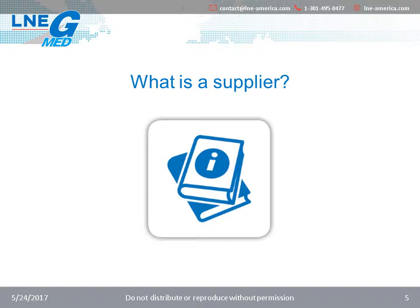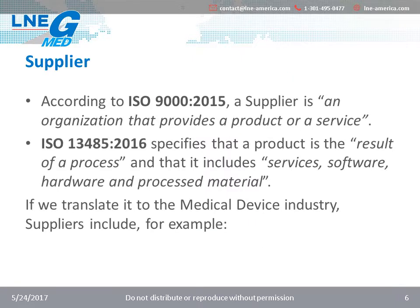So to start with, we will go through definitions. What is a supplier? Is there an official definition for it? There is no definition of supplier in the ISO 13485:2016 standard. However, it does refer to the general definitions found in ISO 9000 of 2015, in which a supplier is defined as an organization that provides a product or a service.